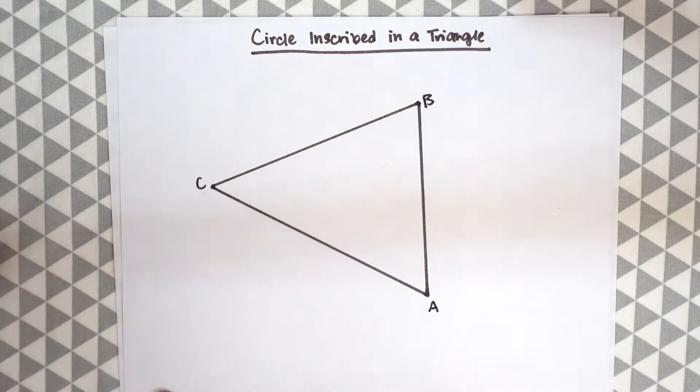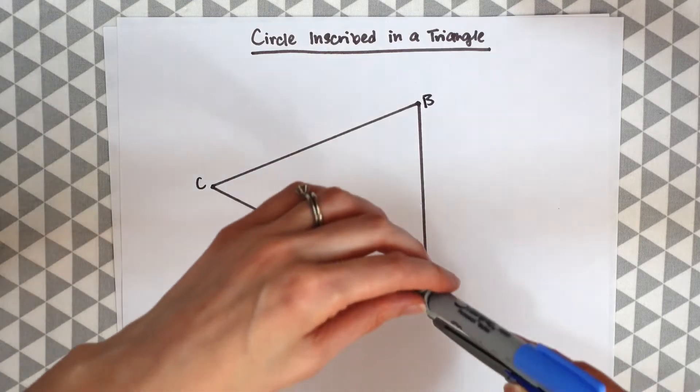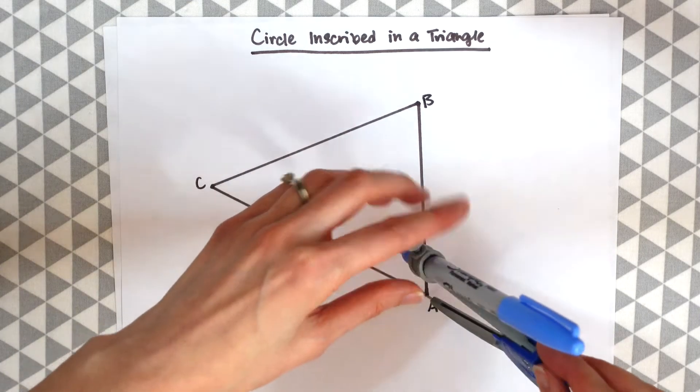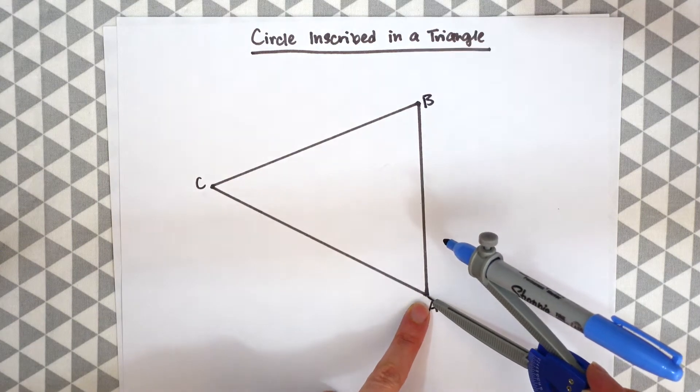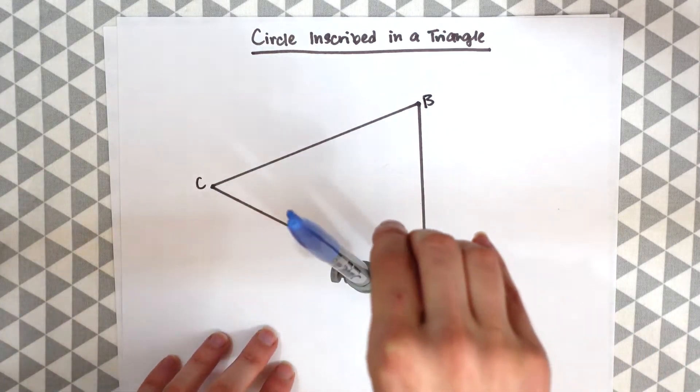So we have triangle ABC and the first thing we're going to do is make an angle bisector on our first angle, angle A. To make an angle bisector we're just going to put the point of the compass to angle A and make a little arc, any size.